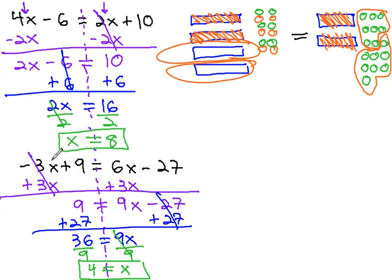We can check this answer by replacing both x's with the four, and hopefully we'll get the same thing. Negative three times four, plus nine, we hope is the same as six times four, minus twenty-seven.